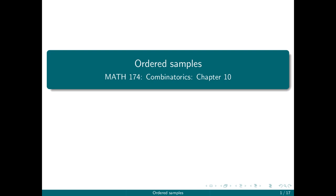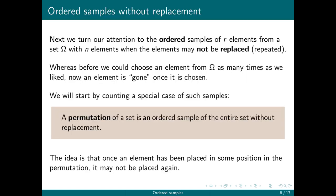We're still talking about ordered samples. Last video, we talked about ordered samples with replacement. Now we're going to talk about ordered samples without replacement. We're going to take ordered samples of R elements from a set omega with N elements, where the elements may not be replaced or repeated. Once we've taken an element and put it in our sample, we're not going to take it again — like drawing tiles from a bag without putting them back, or not returning a card to the deck.